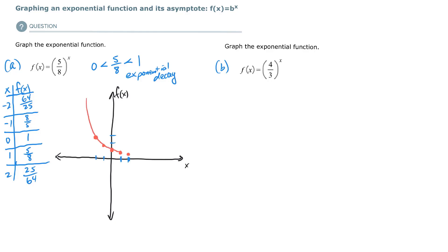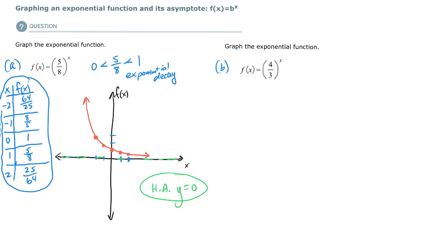There is our exponential decay function, because our base is less than 1. I also need to graph the horizontal asymptote — the horizontal asymptote is y equals 0. We need to circle our ordered pairs in our graph. Make sure you label any possible asymptotes and label your ordered pairs. Labeling is a mathematical skill.